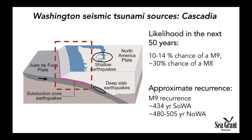First I'll talk about Cascadia. Cascadia earthquakes occur at the interface between the subducting oceanic crust of the Juan de Fuca plate and the overlying continental crust of the North America plate. We know that in the next 50 years there's about a 10 to 14 percent chance of a magnitude 9 great earthquake and about a 30 percent chance of a magnitude 8 earthquake. These magnitude 9 earthquakes recur about every 430 years for the southern part of the Washington coastline to about every 500 years for the northern part, because there are more earthquakes in the southern part of Cascadia than in the northern part.